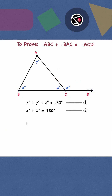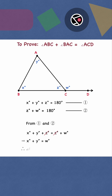Finally, from equations 1 and 2, X plus Y plus Z equals Z plus W. Cancelling out Z from both sides, X plus Y equals W, or angle ABC plus angle BAC equals angle ACD. We are done.